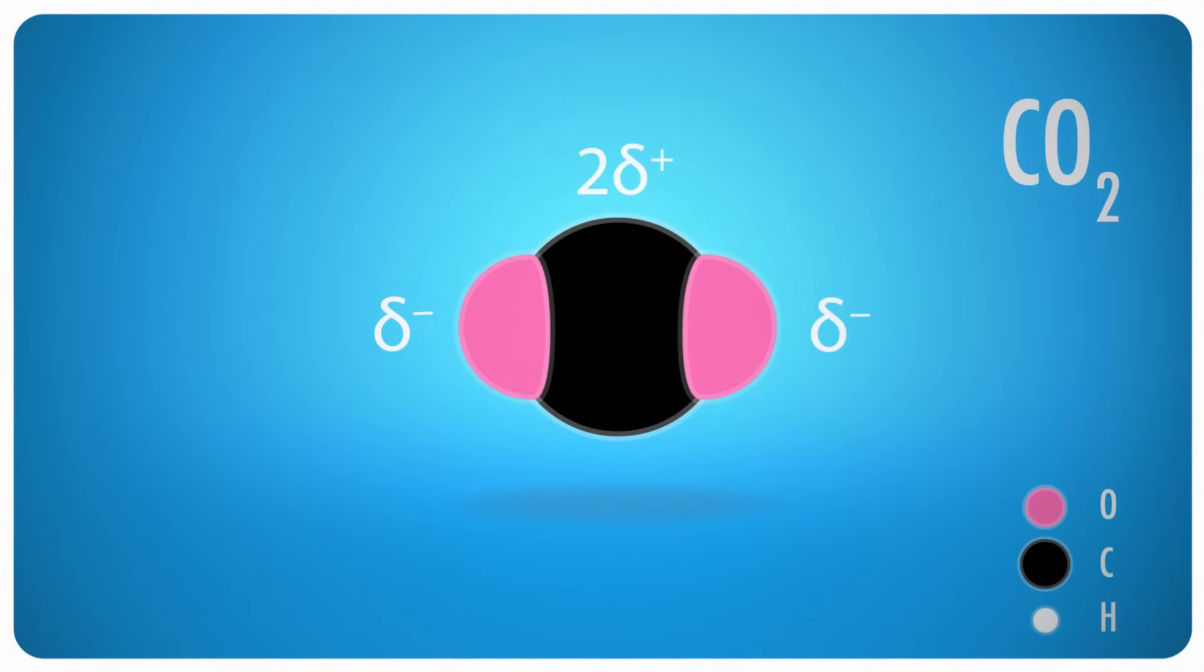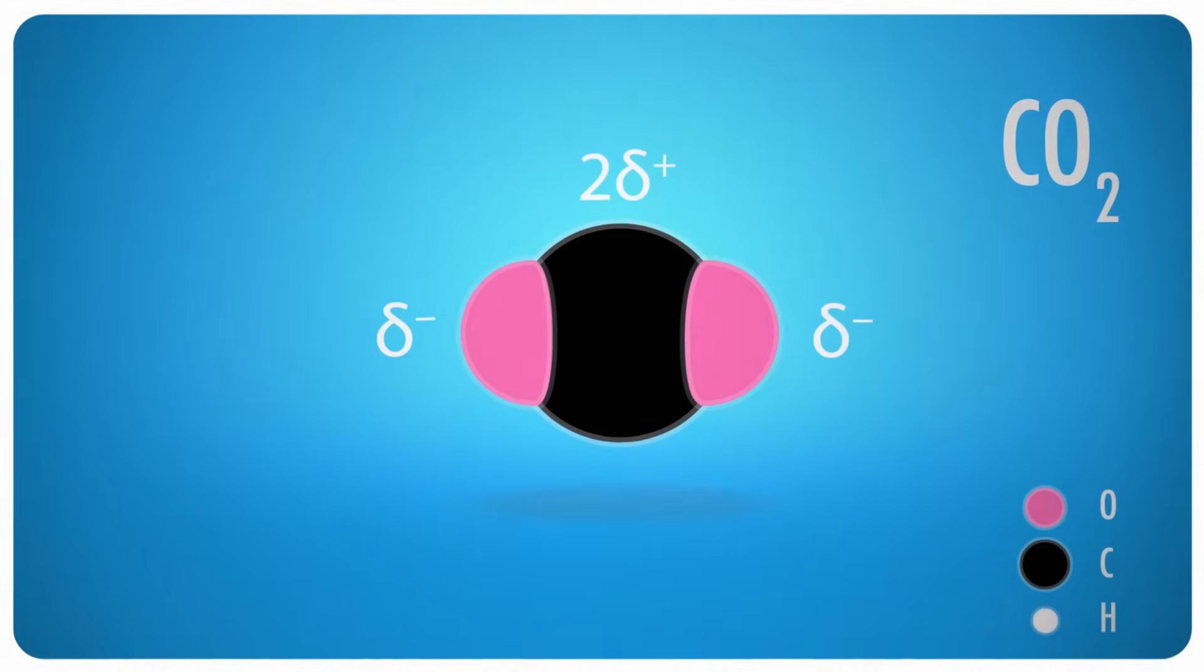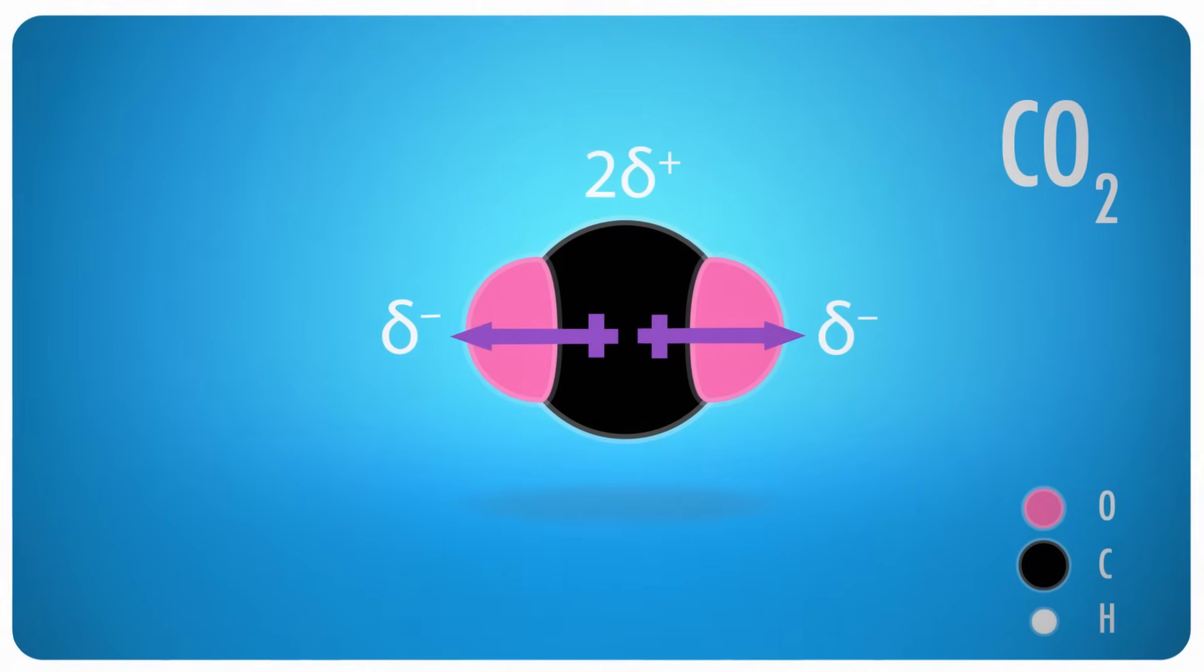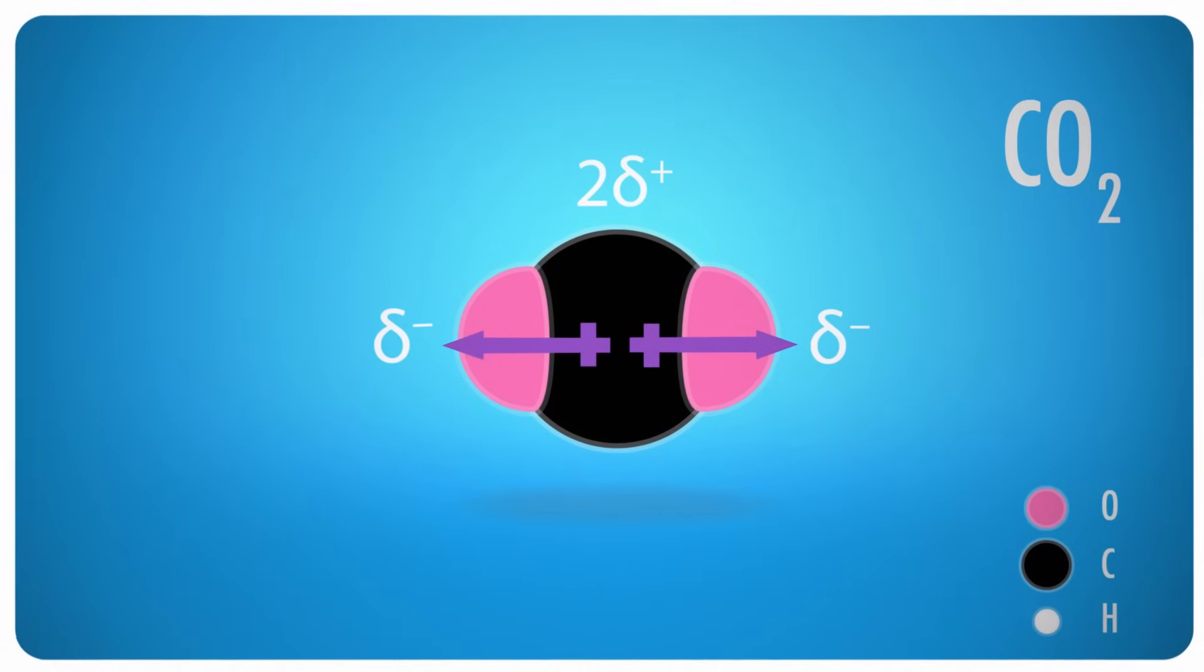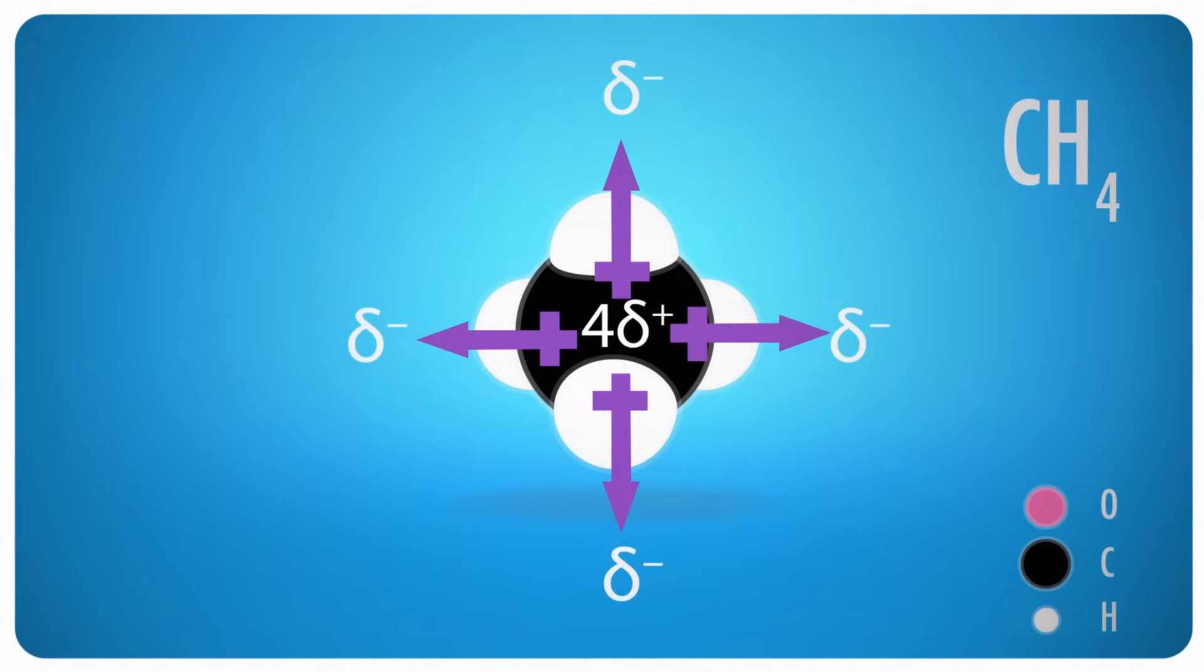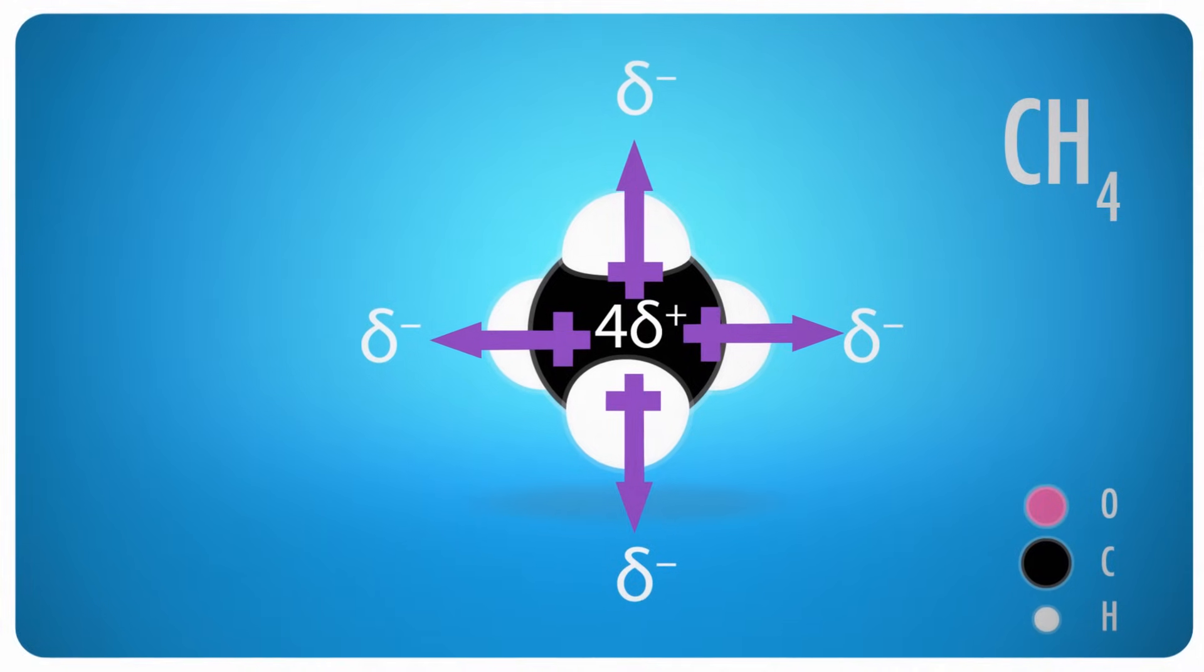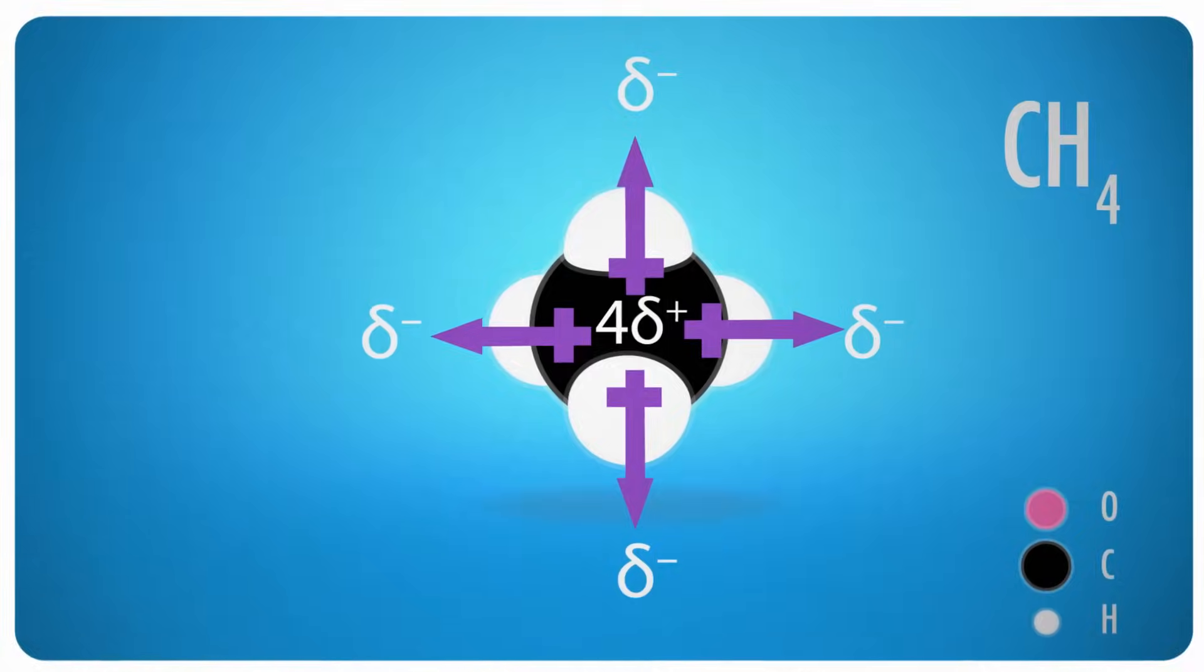Another requirement for polarity, you've got to have geometrical asymmetry. CO2 here has the charge asymmetry locked up, but because the molecule is linear in a straight line, it's a kind of symmetrical asymmetry. The same thing goes for CH4, with its tetrahedron of weakly electronegative hydrogens, around a more strongly electronegative carbon.